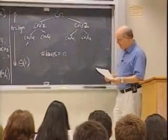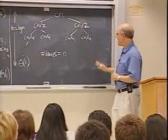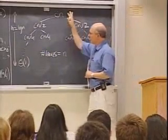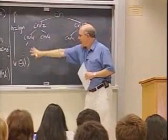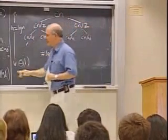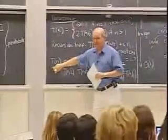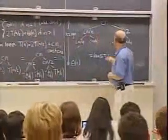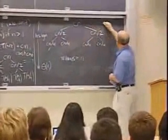Now let's figure out how much work is done. If I add up everything in this tree, I get T(n). Let's add it up level by level.